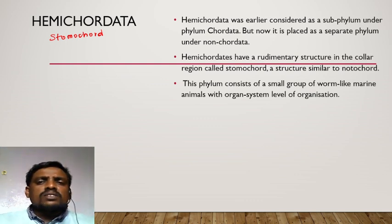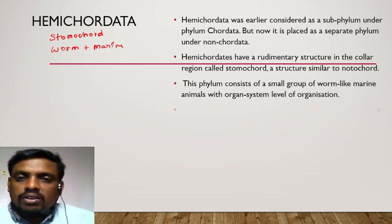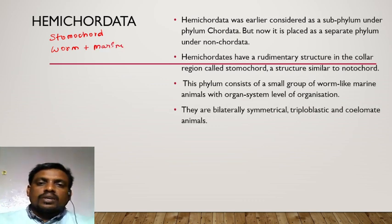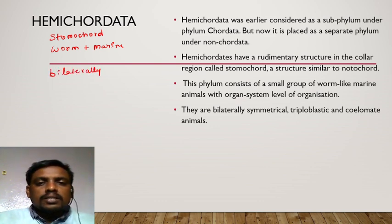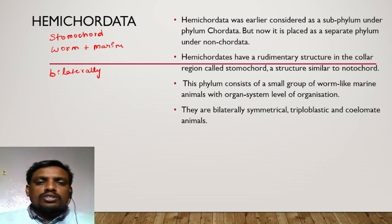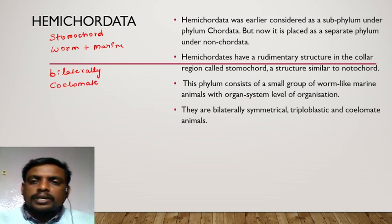This phylum consists of a small group of worm-like marine animals with organ system level of organization. They are bilaterally symmetrical animals with triploblastic organization. A well-developed body cavity is present, hence they are coelomate animals.